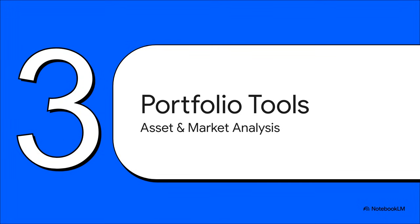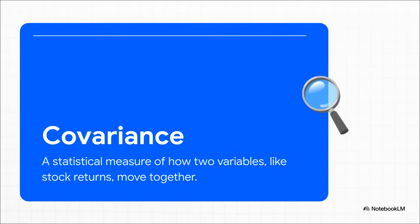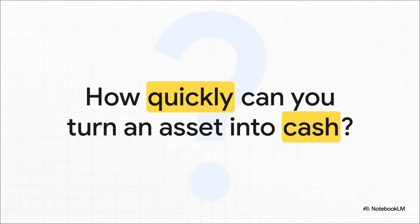Understanding the types of risk is step one. Step two is actually having the right tools in your toolkit to analyze everything. Our first tool sounds really complex: covariance. But the idea is actually pretty simple — it's just a way to measure how two different stocks move in relation to each other. Think of it like two dancers: if they're moving perfectly in sync, that's high positive covariance; but if one zigs while the other zags, their covariance is low, or maybe even negative. Investors use this to try and build a more balanced portfolio.